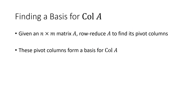That means we can always eliminate the non-pivot columns from any linear combination of the columns of A. What remains will be a linearly independent set that still spans the column space of A. That's how we find a basis for col(A) — the pivot columns of A form a basis for the column space.